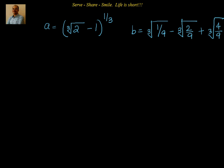We have a equal to cube root of (2^(1/3) minus 1) whole to the power of 1 by 3, and b equal to cube root of 1 by 9 minus cube root of 2 by 9 plus cube root of 4 by 9. We have to establish the relationship between a and b — whether a is greater than b, a equals b, a is less than b, a equals minus b, or a cube equals b.